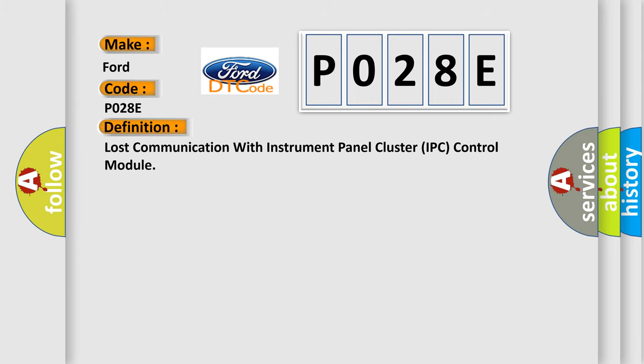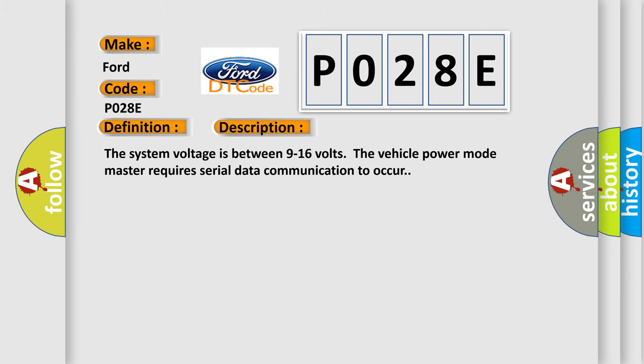The basic definition is: Lost communication with instrument panel cluster IPC control module. And now this is a short description of this DTC code. The system voltage is between 9 to 16 volts. The vehicle power mode master requires serial data communication to occur.